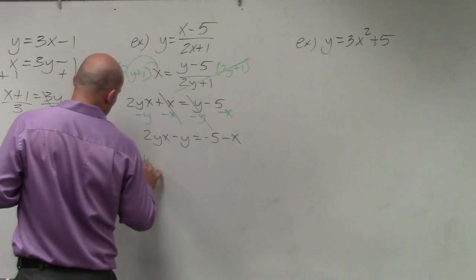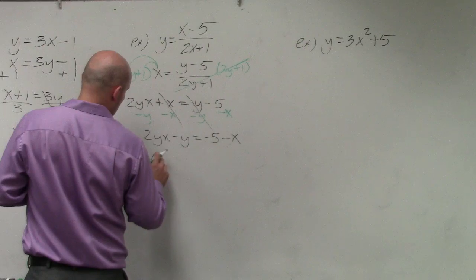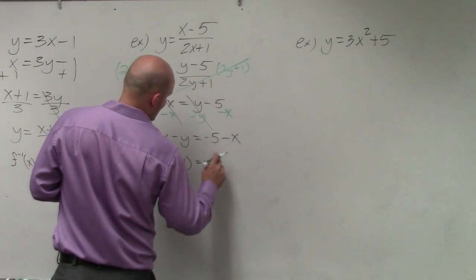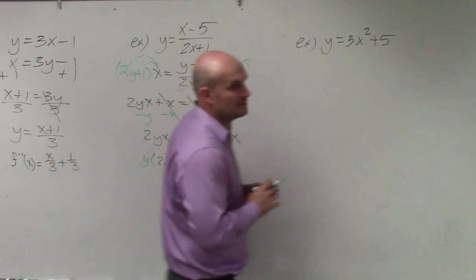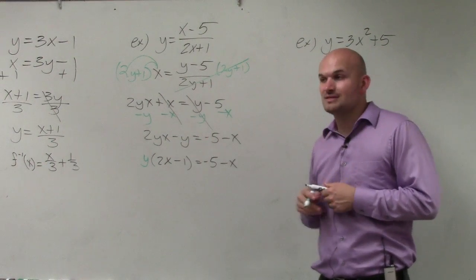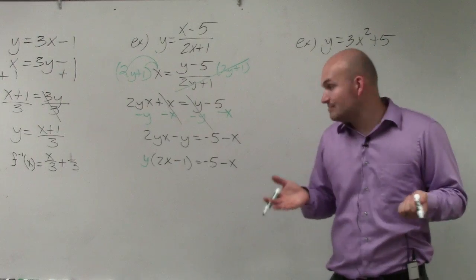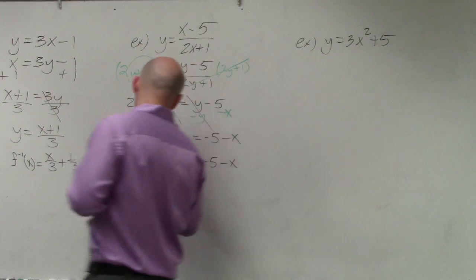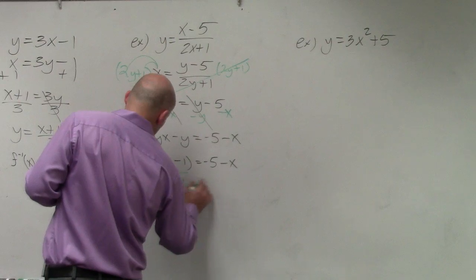So by factoring out the y, I'm now left with 2x minus 1 equals negative 5 minus x. So by factoring out the y, now I have one single y. Now I see my y is being multiplied by 2x minus 1. So to solve for it, I just divide by 2x minus 1.